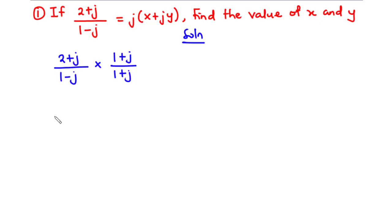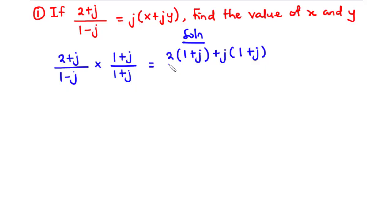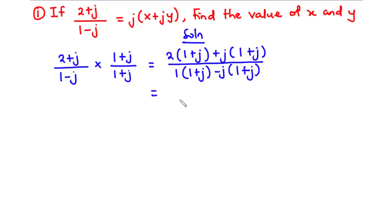Now let's multiply across. In the numerator we have 2 times (1 + j) plus j times (1 + j). Expanding: 2 times 1 is 2, 2 times j is 2j, j times 1 is j.